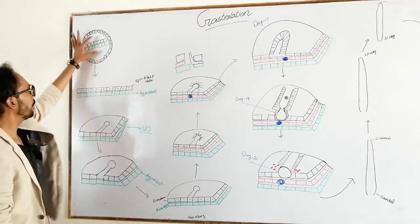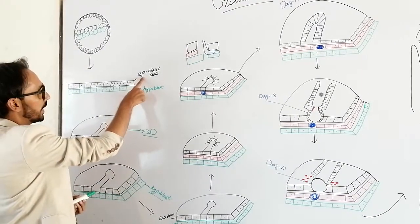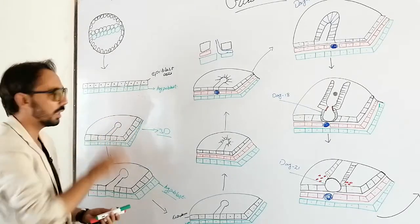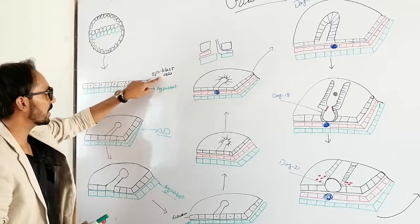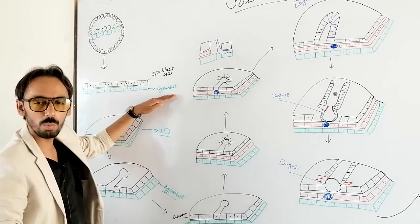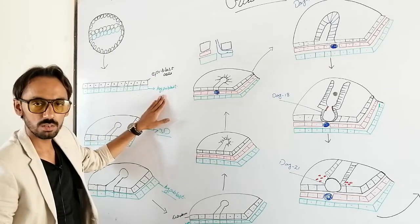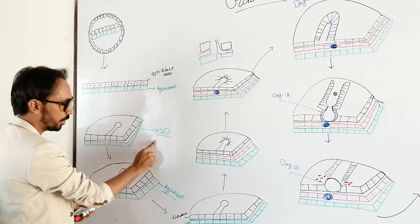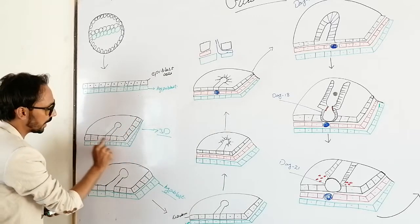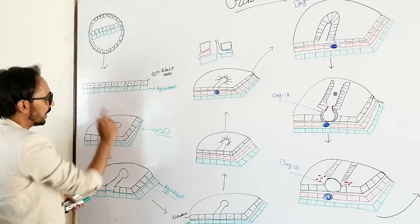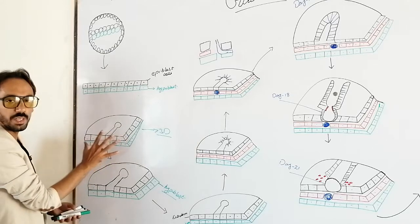As we have discussed in the last lecture, we have a bilaminar layer called the epiblast cells and the hypoblast cells. The cells which are on the upper surface are called the epiblast cells, and the cells on the lower surface are called the hypoblast cells. In the three-dimensional image, the cells in the black marker are the epiblast cells and the layer in the green marker is called the hypoblast.